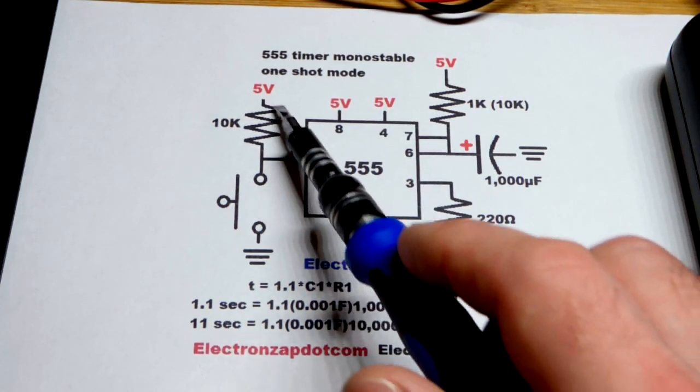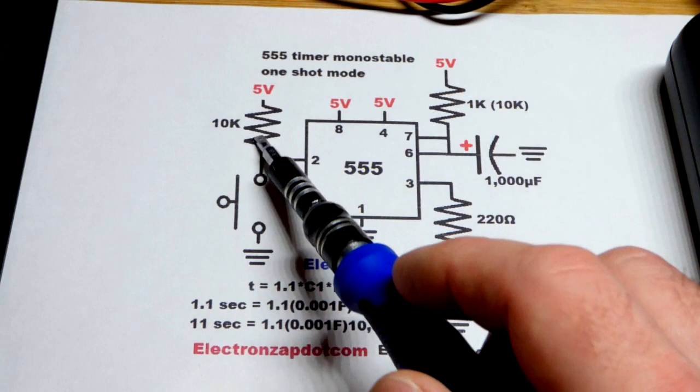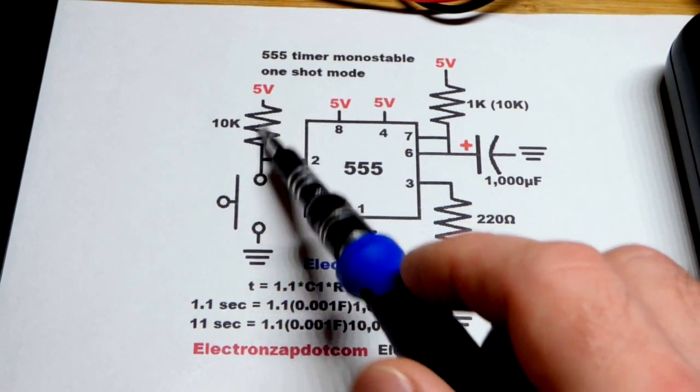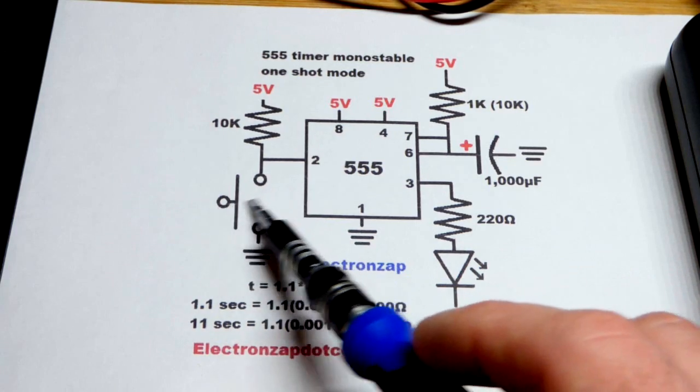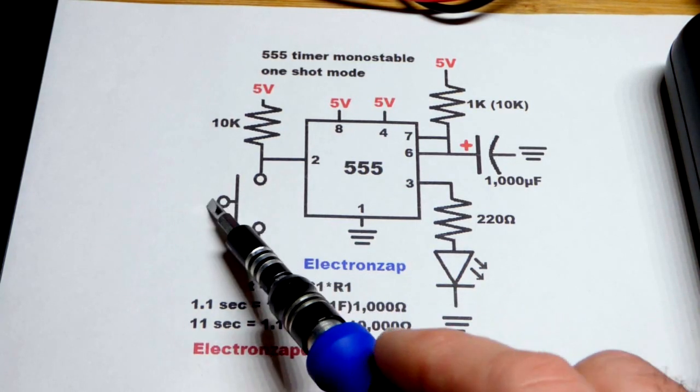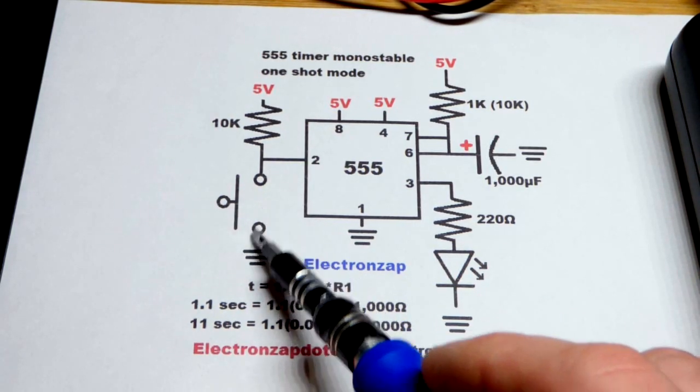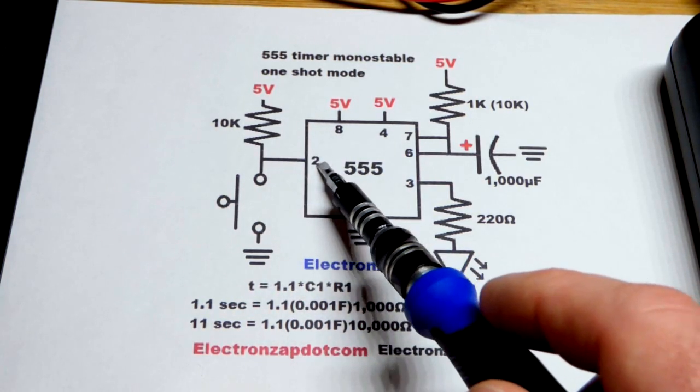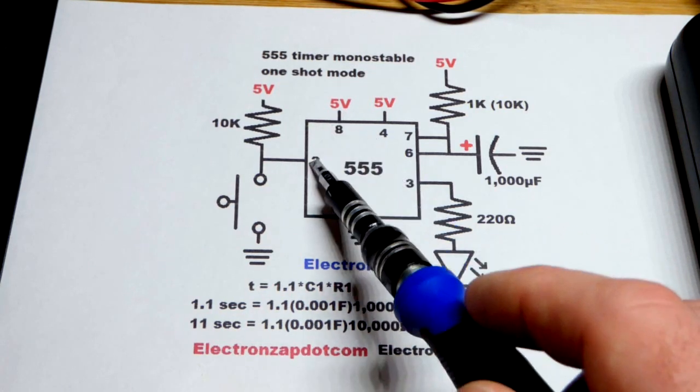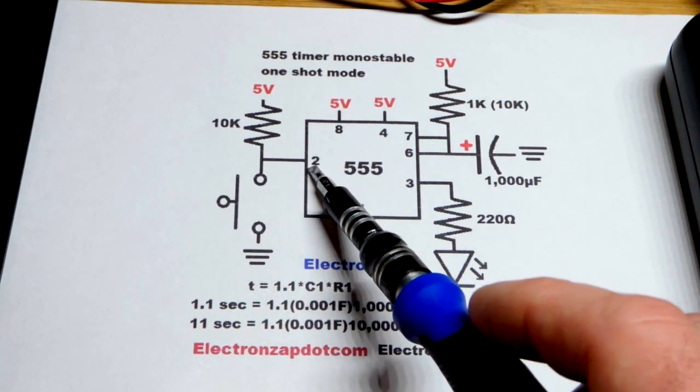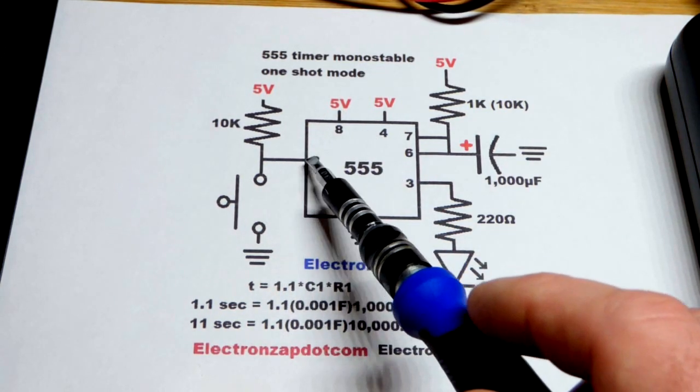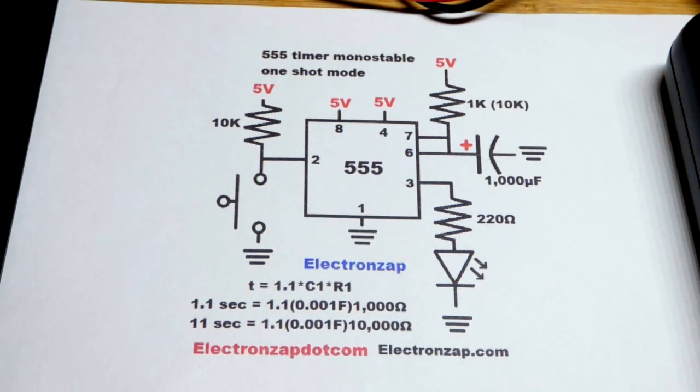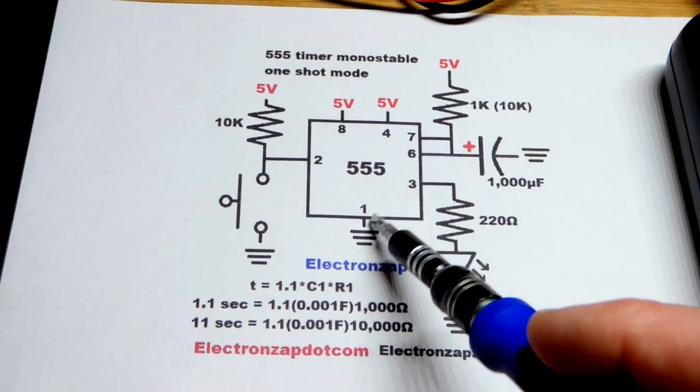Now pin 2, it's getting a high signal before we press the button and sees 5 volts. We close the switch, that gets rid of the resistance to ground. We get 0 volts to pin 2. It's waiting for one third or less of the supply voltage, and 0 volts is as far down as you can go. So when you press that switch, the trigger pin triggers and sets the 555 timer in motion.